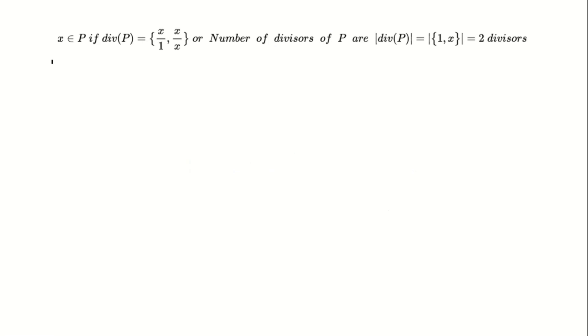Let's break this down. If you have a number, let's call it X, and it belongs to the set of prime numbers, it will only have two divisors, one and the number itself.